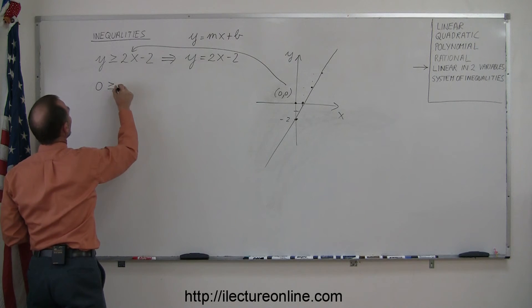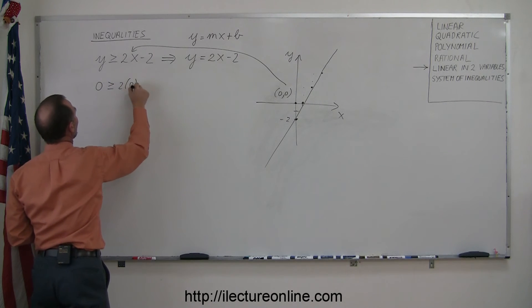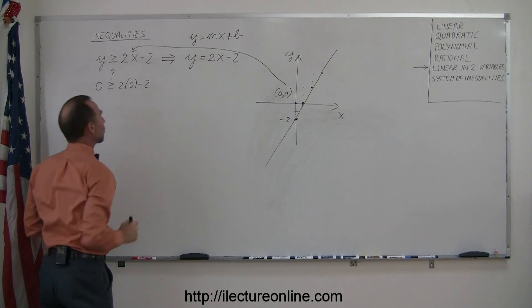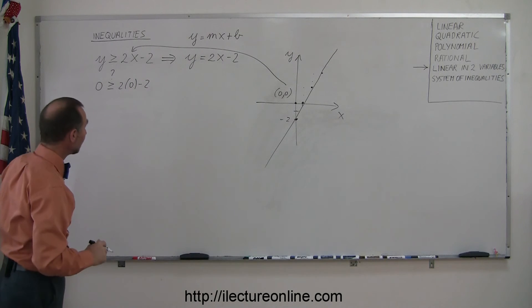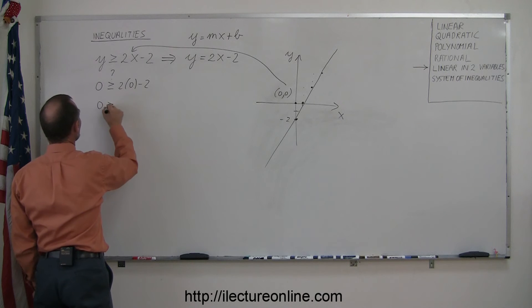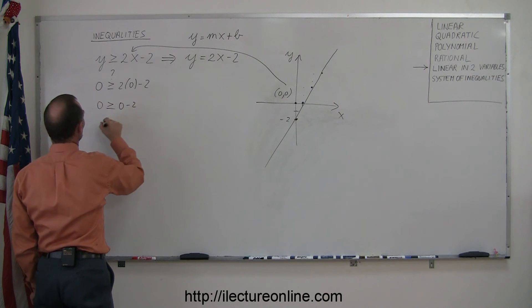0 for y, greater than or equal to 2 times 0 for x minus 2—that's a question mark. We don't know if that's going to be true or not. Let's simplify it: 0 ≥ 0 - 2, or 0 ≥ -2.